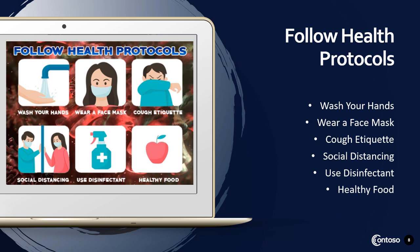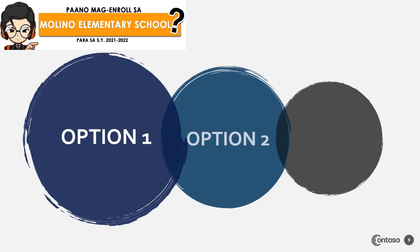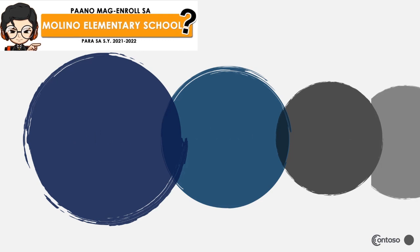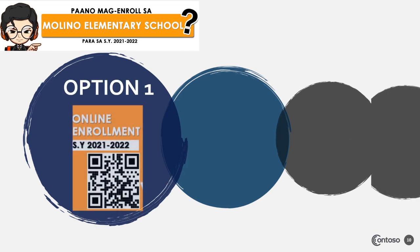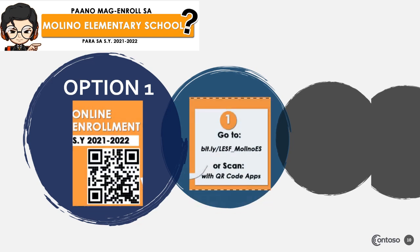Narito ang iba't ibang uri ng pagpapatala ng inyong mga anak. Meron po tayong tatlong opsyon ng pagpapatala sa paaralang elementarya ng Mulino, na makikita sa ating school page at tarpaulin sa labas ng paaralan at mga barangay. Ang Option 1 ay ang online enrollment. Bisitahin ang ating school page, DepEd Molino ES, Bacoor City, o ang link na ipinakalat ng mga guro sa bawat grupo ng mga mag-aaral noong nakaraang taon.